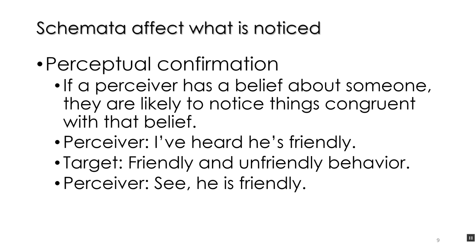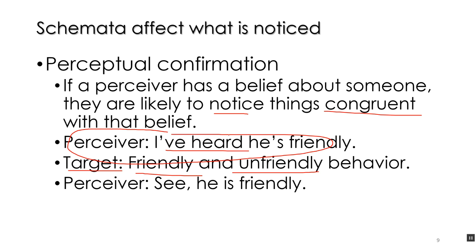When we get more into social cognition, we run into perceptual confirmation. This is when a perceiver has a belief about someone, they are likely to notice things congruent with that belief. For example, if you've heard someone is friendly and then interact with them — and they behave normally, sometimes friendly, sometimes not — you'll mainly notice the friendly behaviors. Your schema biases you toward concluding they're friendly. That's perceptual confirmation of a schema.